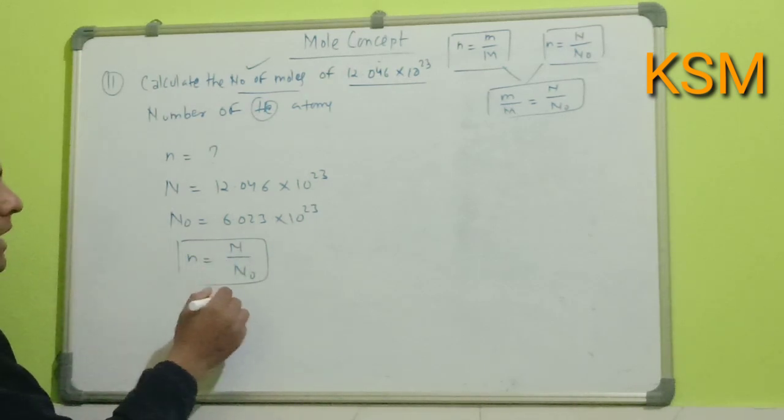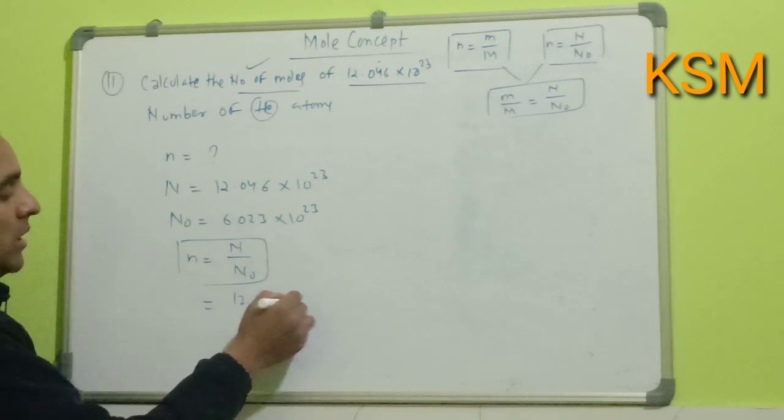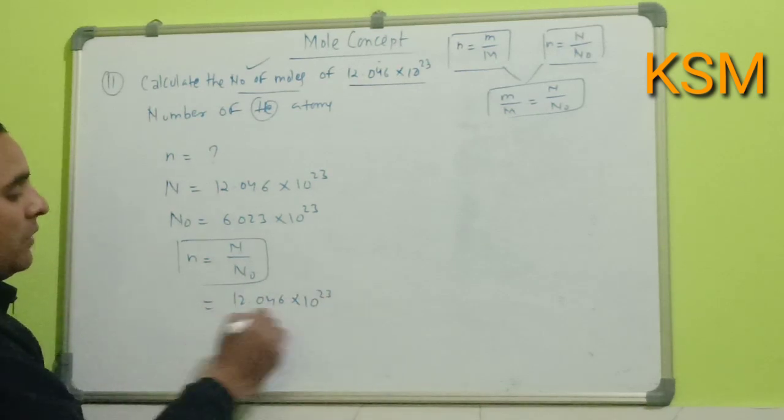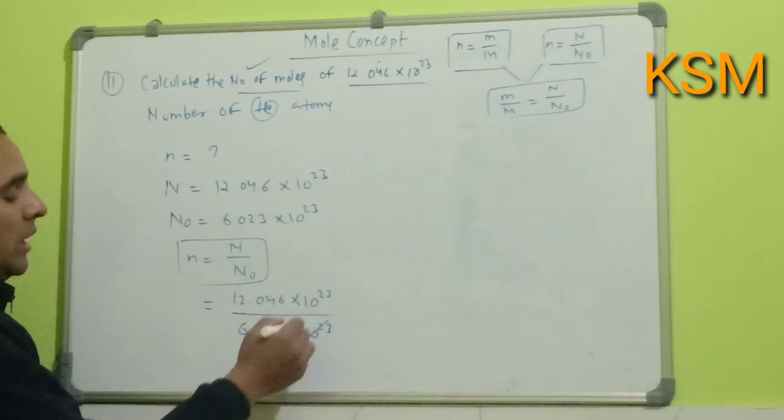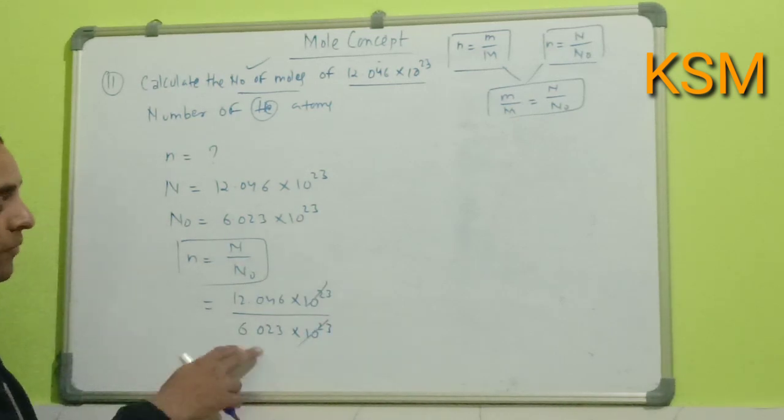n = 12.046 × 10^23 / 6.023 × 10^23. The 10^23 terms cancel out.